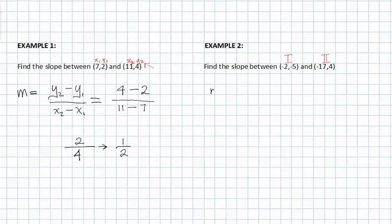Once again, m or slope is equal to y sub 2 minus y sub 1 over x sub 2 minus x sub 1, and now I'm going to plug in the values. 4 is going to represent my y sub 2 and negative 5 is going to represent my y sub 1.